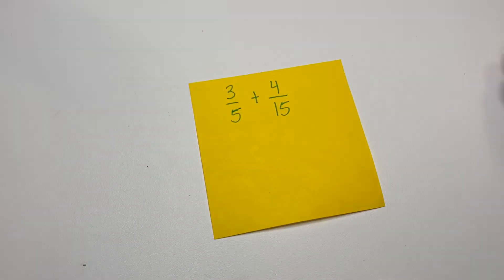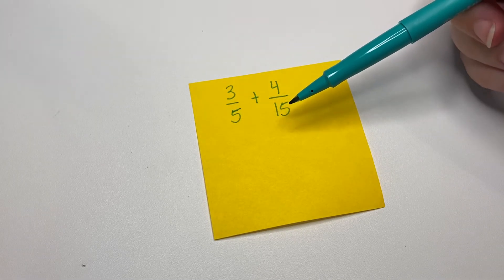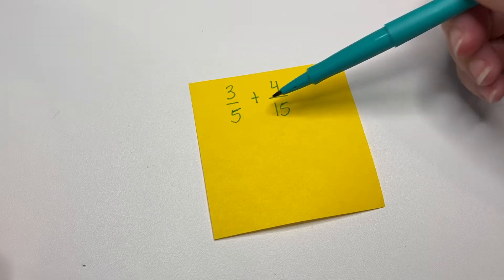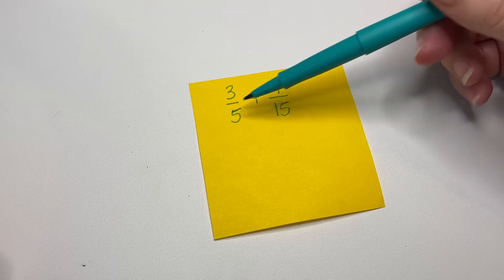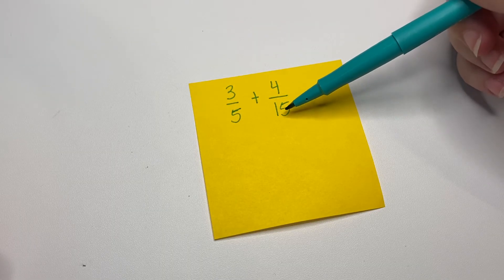So the first thing we said we were going to do is check to see if one of the denominators is a factor or goes into the other one. So does 15 go into 5? No. But 5 goes into 15. How many times does 5 go into 15? 3 times.